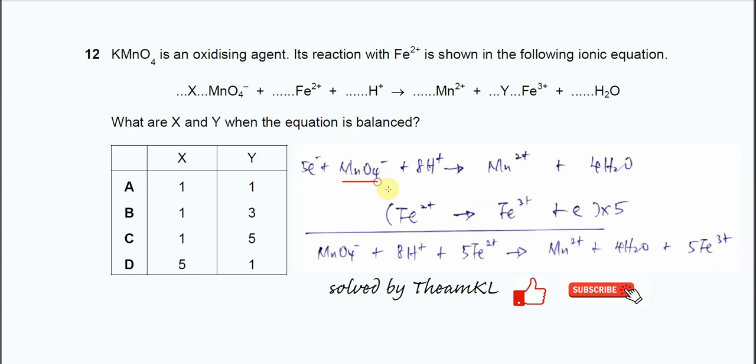So let's start with the first half equation. From this permanganate ion or MnO4 negative, so it will reduce to Mn2 positive. So you start with this one first. After that, you balance it. So the manganese is 1, 1. So no need to balance the manganese.